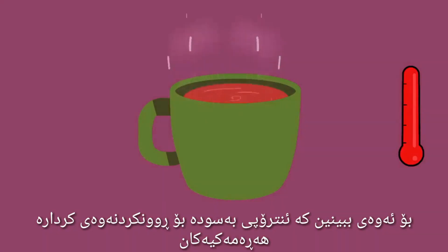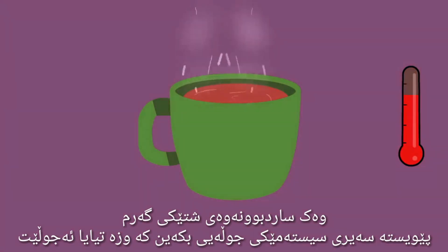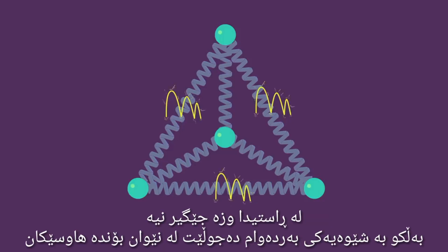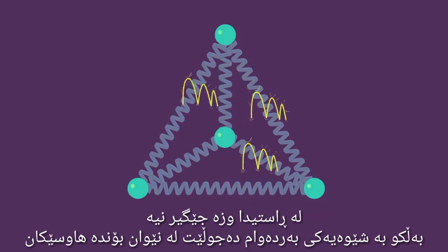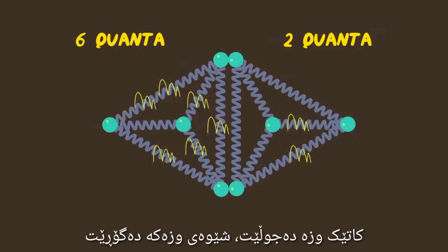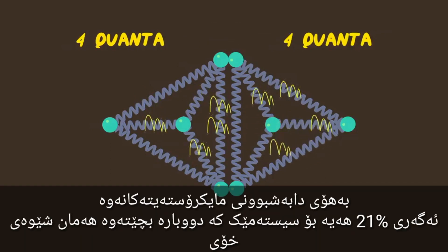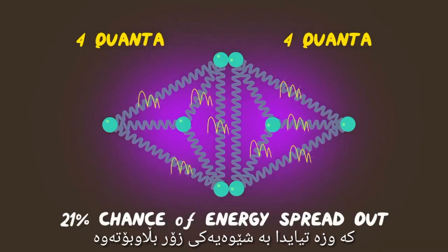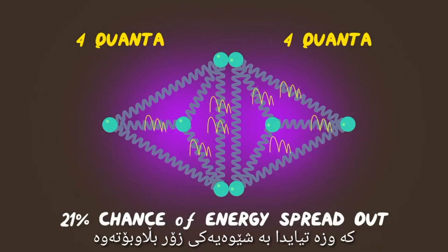To see why entropy is useful for explaining spontaneous processes like hot objects cooling down, we need to look at a dynamic system where the energy moves. In reality, energy doesn't stay put — it continuously moves between neighboring bonds. As the energy moves, the energy configuration can change. Because of the distribution of microstates, there's a 21% chance that the system will later be in the configuration in which the energy is maximally spread out.